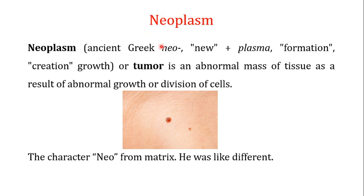We call this 'neo' because this growth is abnormal — it is a new growth. If you have seen the movie Matrix, there is a character called Neo who was different from the other individuals in the film, showing special characteristics. Similarly, neoplasms or tumors show specialized properties in comparison to the normal cells present in the surroundings.